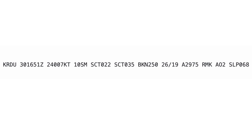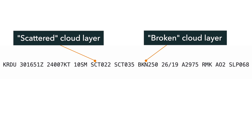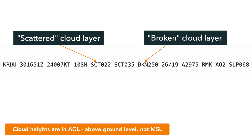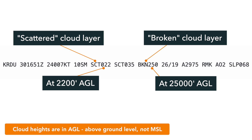In addition to wind, you're also going to have questions about the clouds. There's a three-letter abbreviation for the type of cloud, and then three numbers for the height of those clouds. These heights are given in AGL — above ground level — not MSL, because when we're flying, we care most about how much space we have between the ground and the clouds. They are given in hundreds of feet, so you add two zeros to that number to get how high above the ground that cloud layer is.